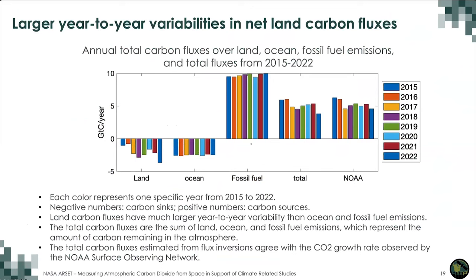The total represents the amount of carbon remaining in the atmosphere based on top-down flux inversion — the sum of fossil fuel emission and the carbon sink over land and ocean. This total carbon flux inferred from top-down is consistent with the NOAA observed atmospheric CO2 increase, which serves as a quality check on the top-down CO2 flux inversion results.